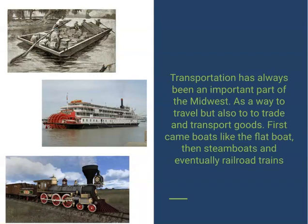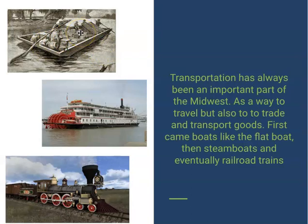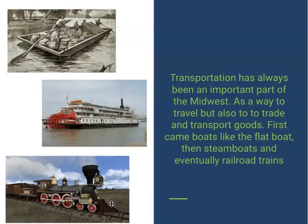Transportation has always been an important part of the Midwest — for travel and for getting goods where they need to go. We started with flat boats, which were flat and piled with goods, but could only go downstream. Then came the steamboat, which could go upstream and downstream because a steam engine powered the paddle wheel at the back. Once railroad tracks were built, trains allowed transportation in areas without rivers, so the railroad became an important part of the system as well.